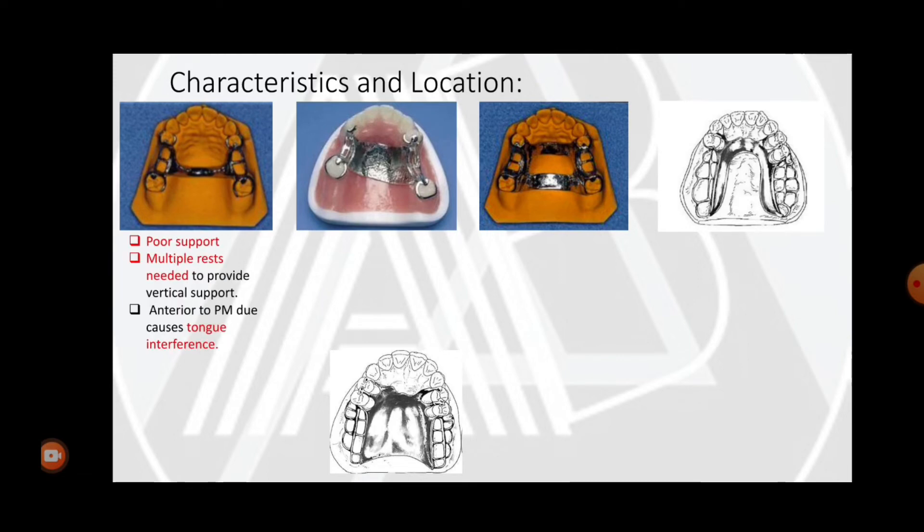Characteristics of the palatal bar: it provides poor support because it is narrow. To improve support, multiple rests on the tooth surface are needed. If placed anterior to the premolar, it usually causes tongue interference.